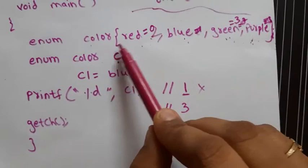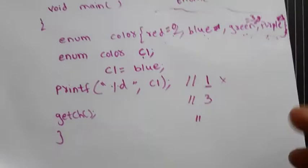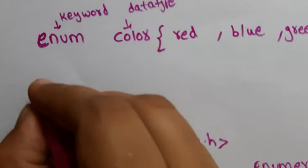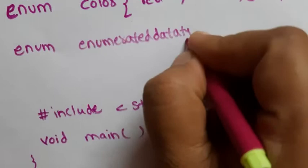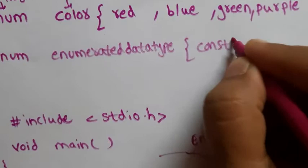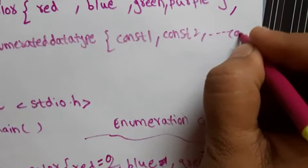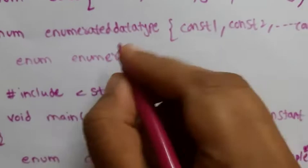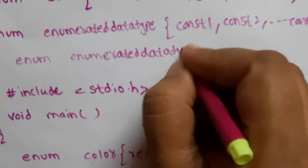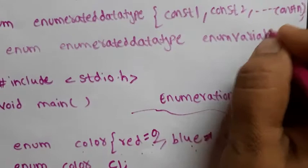The main purpose of enumerated data types is to create your own data type with integer constants. The syntax is: enum [data-type-name] { constant1, constant2, ..., constantN }; — you can mention any number of constants. To declare a variable: enum [data-type-name] [variable-name]; — for example, enum color c1.